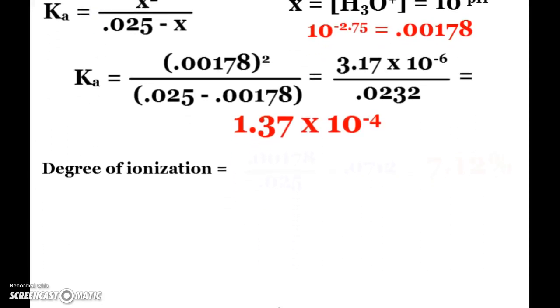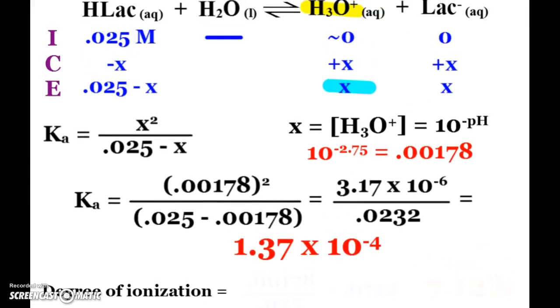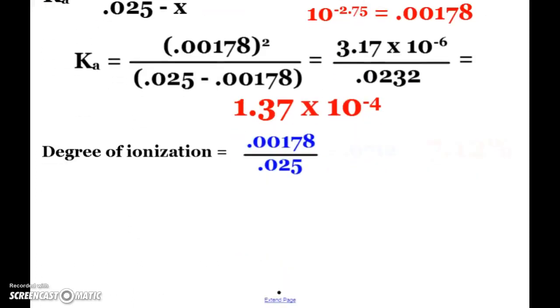What is the actual degree of ionization? Well, what that means is how much of the acid dissociated. We started with the fact that lactic acid was at 0.025 molar, and it dissociated this much, x. So all we have to do is take x, divide it by our original concentration, and when you do that, you get the degree of ionization. It could be left in decimal form, or just multiply by 100 and get a 7.12 percent.